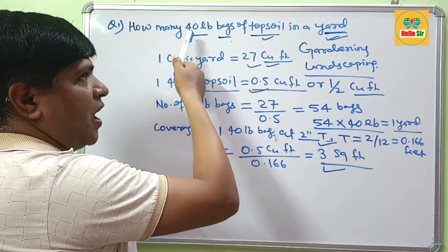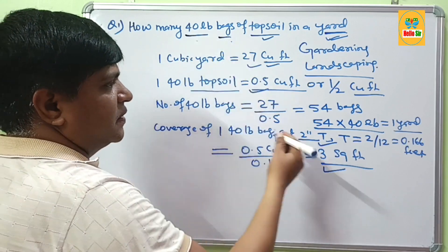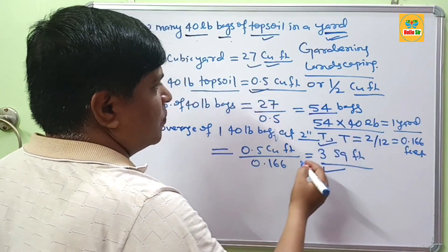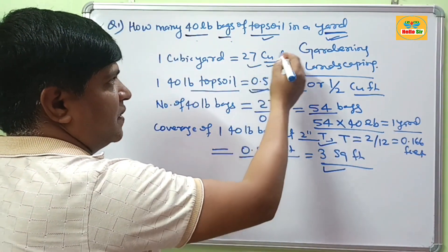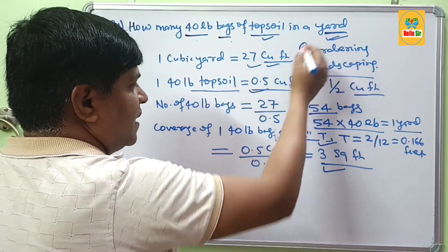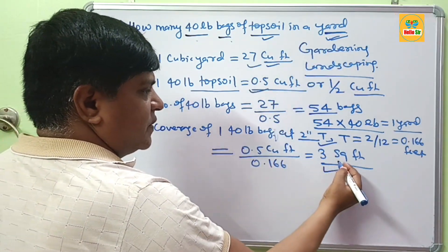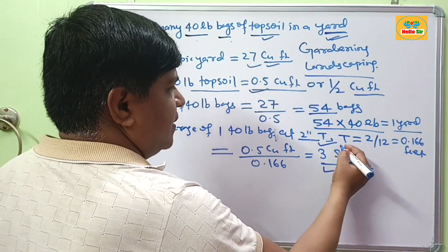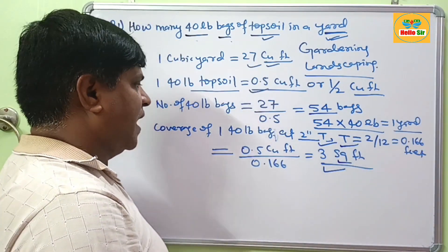To summarize: how many 40 lb bags are required? 54 bags of 40 lb topsoil are required for 1 cubic yard, and each bag covers around 3 square feet of area at 2-inch thickness.